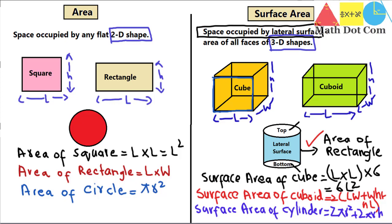So area and surface area differ from each other in terms of the shape. For plane or flat shapes you find the area, and for solid 3D shapes you find the surface area — sometimes called total surface area. For a cylinder, total surface area is the area of the top plus bottom plus the lateral surface area. I hope your concept is now clear about how area differs from surface area. Stay tuned.